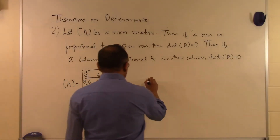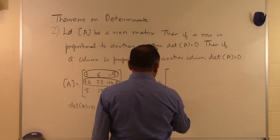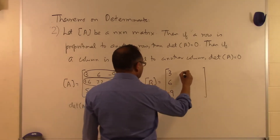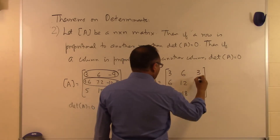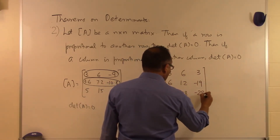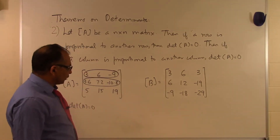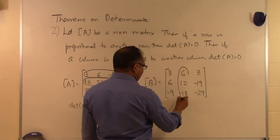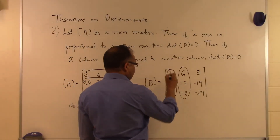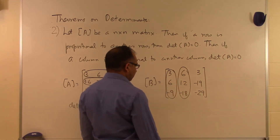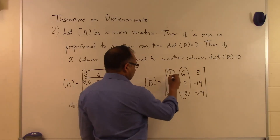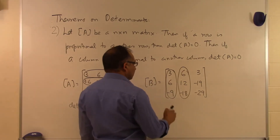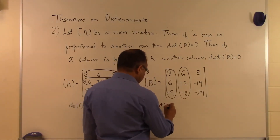Let's look at another example where the columns are proportional. Suppose matrix A is: 3, 6, 3; 6, 12, -19; -9, -18, -29. If you recognize that the second column is two times the first column — 3 times 2 is 6, 6 times 2 is 12, -9 times 2 is -18 — then the determinant of that matrix is equal to zero.